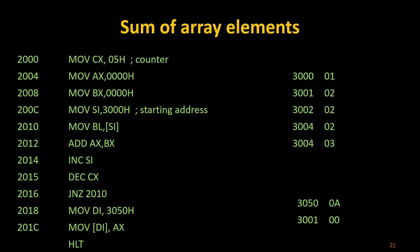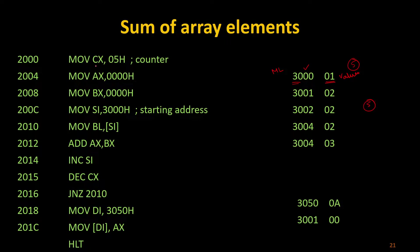So this is the program. Initially I have to declare an array. Here I am going to declare an array of size 5. These are my memory locations and these are my values which are getting saved in the array. I am going to take 5 values total, so first I have to make my counter register CX to be 05.